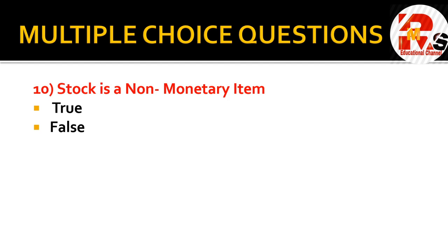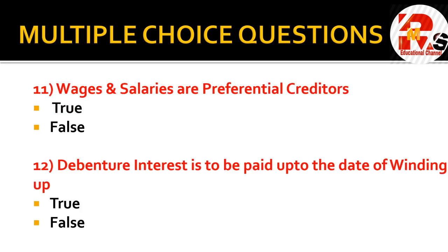Now let's look at some true/false questions. True or false: stock is a non-monetary item. The correct answer is true. Stock is a non-monetary item because we store it in our warehouses; it only becomes a monetary item when we sell it. That is why the answer is true.